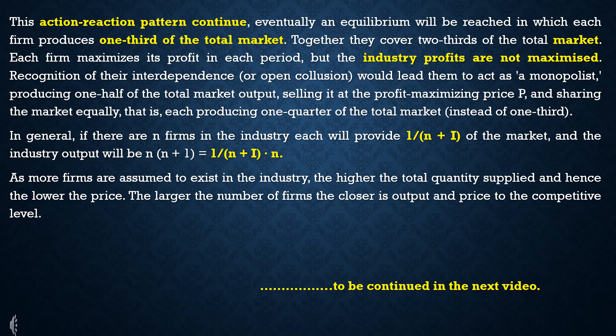If there are N firms in the industry, each firm will supply 1/(N+1) of the market, and the total industry output will be N/(N+1).